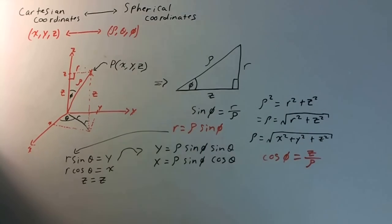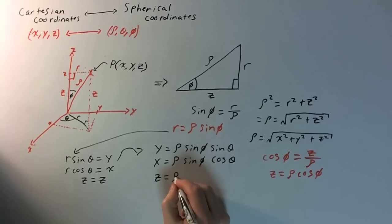And again, the same thing here, multiply rho by both sides, and we get the fact that z is going to be equal to rho times the cosine of phi. So, that's just what z is.